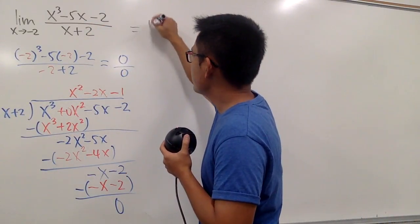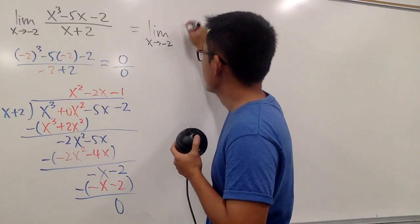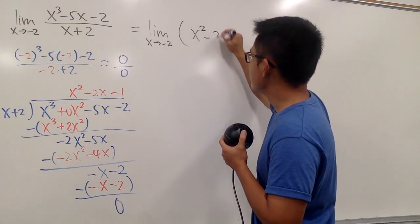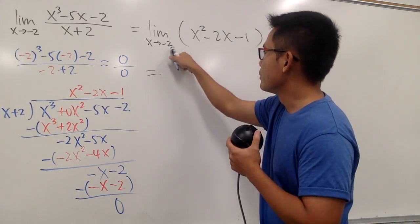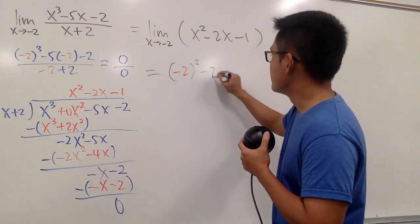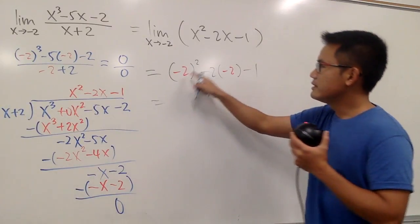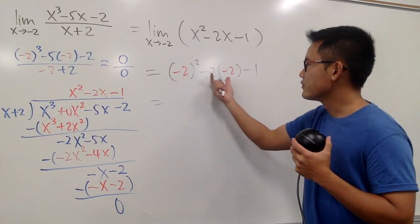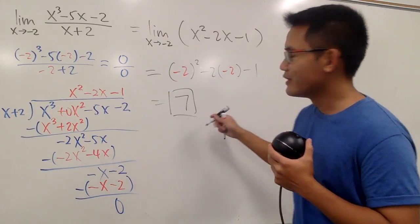So by long division, we can simplify the expression. The limit as x approaches negative 2 is just x² minus 2x minus 1. Now plug in x equals negative 2: that's (negative 2)² minus 2 times (negative 2) minus 1, which is positive 4 plus positive 4 minus 1 — so 8 minus 1 equals 7. That's the answer.